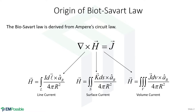We have three main ways that we tend to write it: calculating the magnetic field intensity around line currents, around surface currents, and around volume currents. Other than being a one-dimensional, two-dimensional, or three-dimensional integration, they differ in how they describe the current. A line current is defined in terms of a differential length, a surface current uses a differential area, and a volume current uses a differential volume.